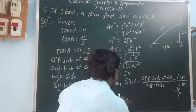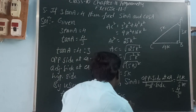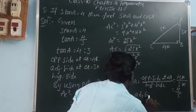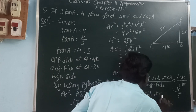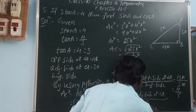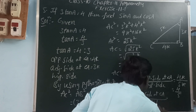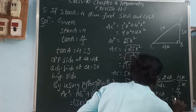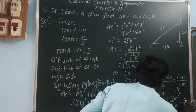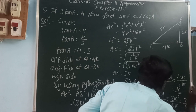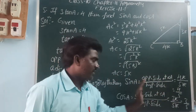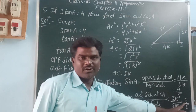Next, cos A. Cos A is the adjacent side at angle A divided by the hypotenuse. The adjacent side is 3k and the hypotenuse is 5k. The k cancels, giving cos A equals 3 by 5. So sin A is 4 by 5 and cos A is 3 by 5.